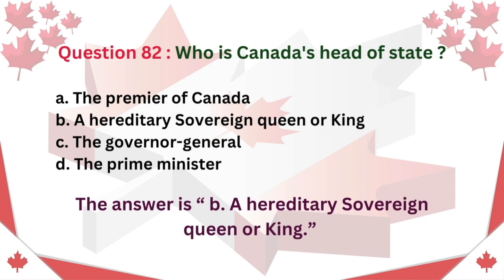Question 82. Who is Canada's head of state? A. The Premier of Canada B. A hereditary sovereign queen or king C. The Governor-General D. The Prime Minister. The answer is B. A hereditary sovereign queen or king.